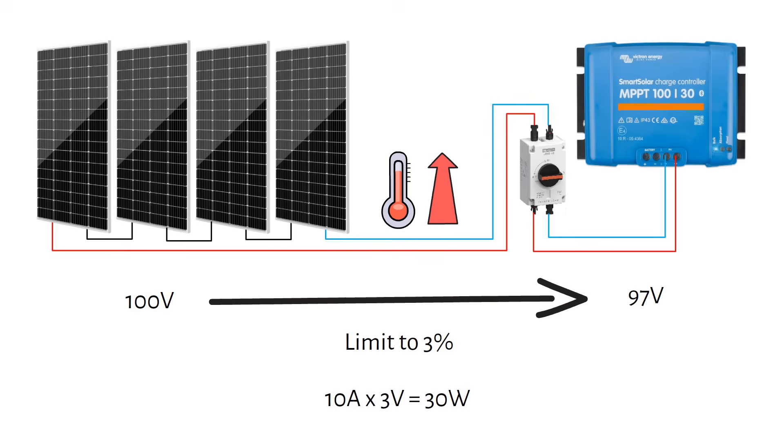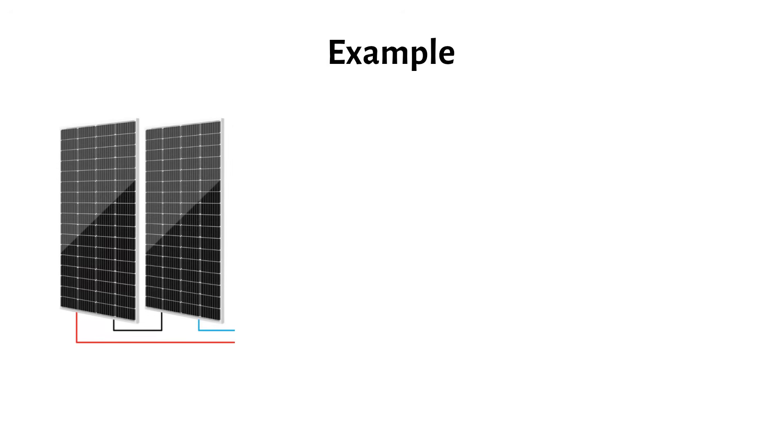In a typical off-grid system, the cable between the solar panels and the MPPT is usually the longest run, so that's where it makes sense to calculate the voltage drop. Let me show you how we calculate it using an example. We will use two 200 watt panels in series. These are the panel specifications.